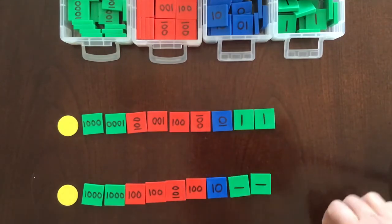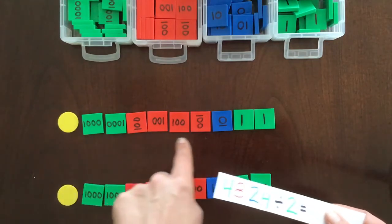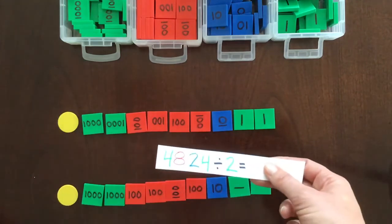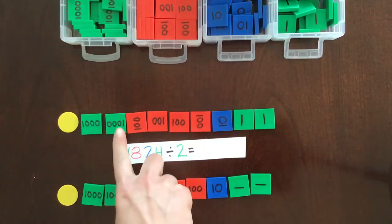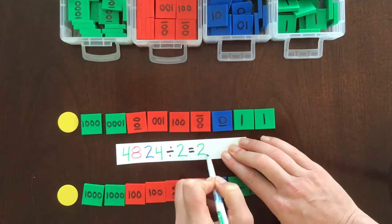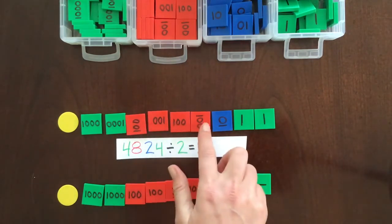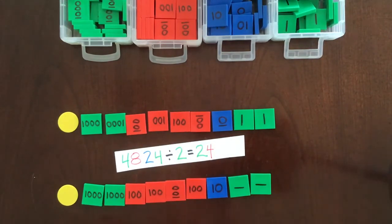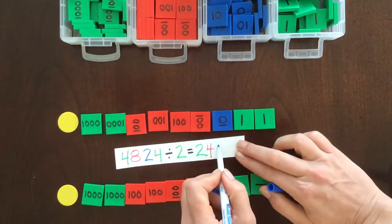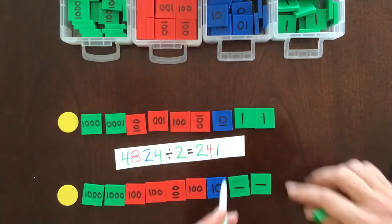Okay, now the answer is how much one of these got. Okay, so we're just going to look at one of these, and we'll record that. So we have 2 thousands, so we'll write our 2, 1, 2, 3, 4 hundreds, 1 ten, and 1, 2 ones.